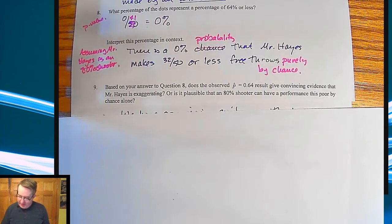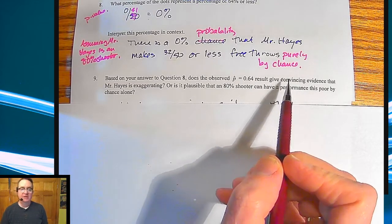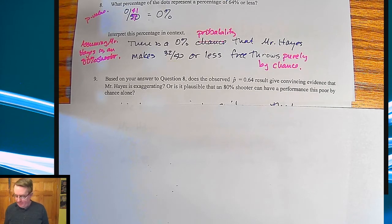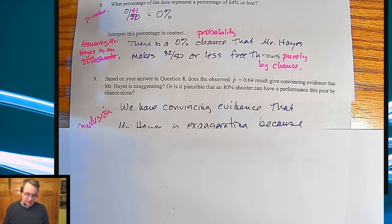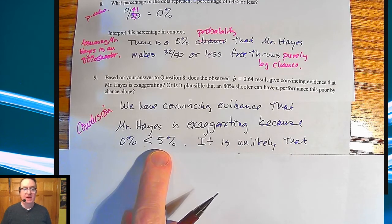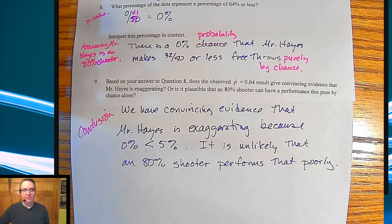Based on that, does a P-hat of 64% give convincing evidence that Mr. Hayes is exaggerating, or is it plausible he's an 80% shooter who just had a bad day? We have convincing evidence that Mr. Hayes is exaggerating because zero is less than 5% — we're coming back to that 5% threshold we normally use — and it is unlikely that an 80% shooter would shoot that poorly. That's how hypothesis testing works. We'll get a little more formal with this next time — talk to you later.